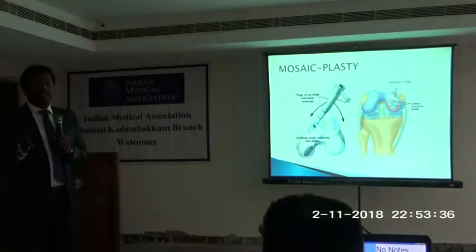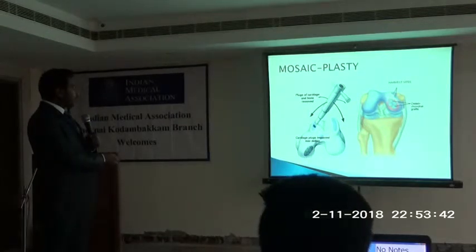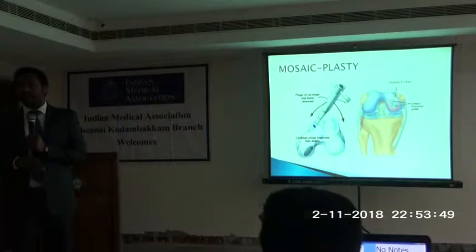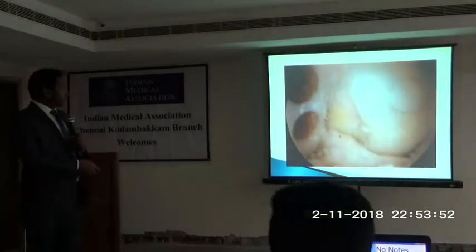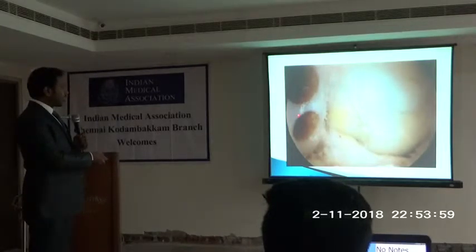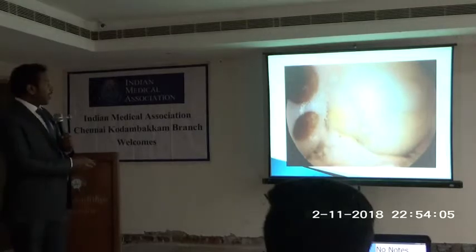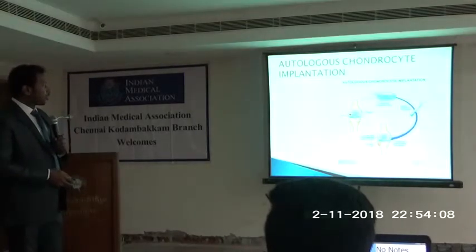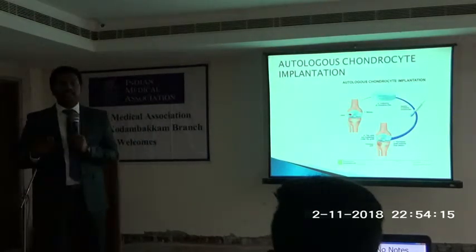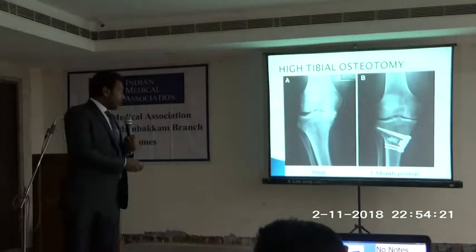Mosaicplasty is done for the same conditions when we know preoperatively there is focal cartilage loss. We take cartilage plugs from a less important, non-articular area — such as the intercondylar area which does not actively participate in articulation — and plug them into the defect where cartilage is lost. Chondrocyte implantation involves culturing cartilage cells and injecting them at the defect area, which is possible but I do not have personal experience with it, though this procedure is now picking up.